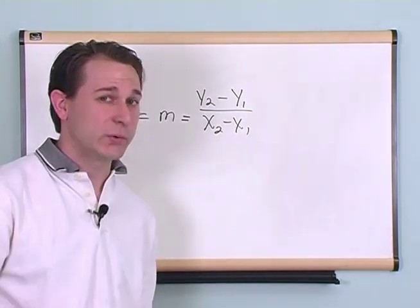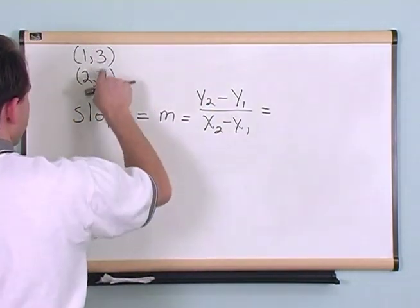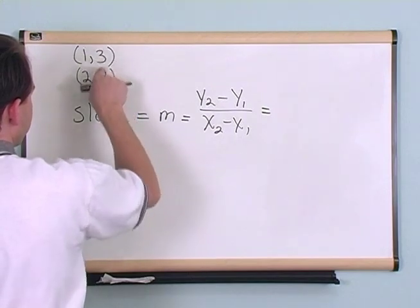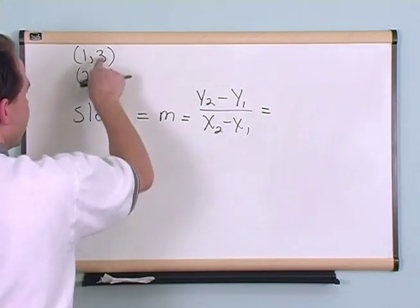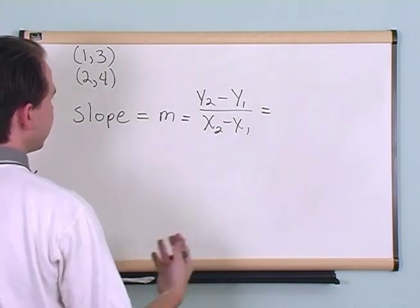So don't let these little numbers fool you. All you have to do is you have to take, remember this is x comma y, you have to take the two y values and subtract them and then the two x values and subtract them and that's all you have to do.